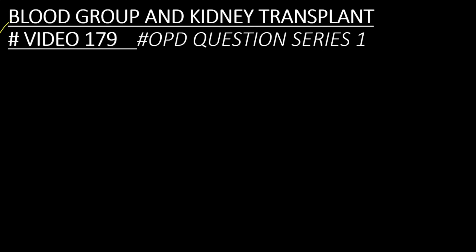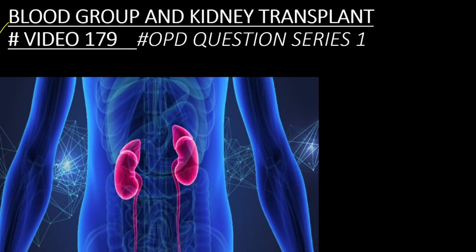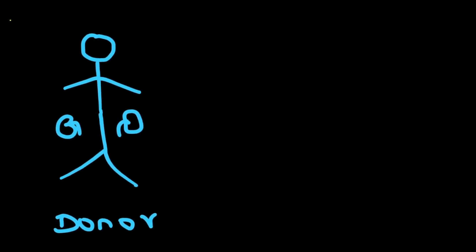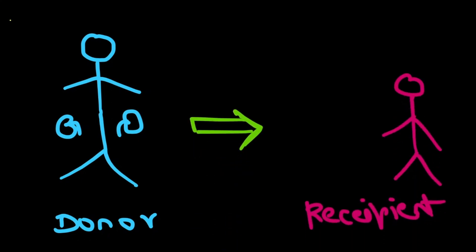Good evening everyone. The topic for discussion today is blood group and kidney transplant, which is a commonly encountered OPD question where a patient with end-stage renal disease has relatives who want to donate the kidney. They want to know whether the blood group is compatible with the recipient. The most important thing is that the recipient should not reject the kidney, and for that, blood group matching is critical.